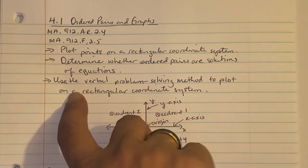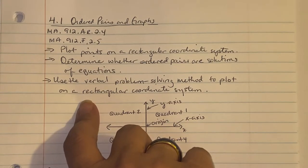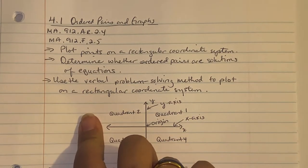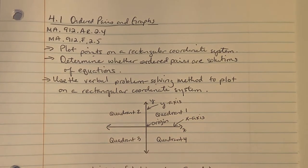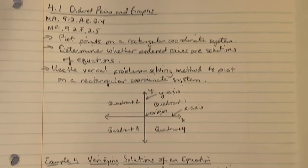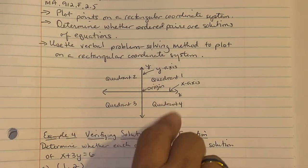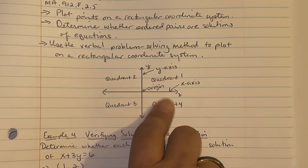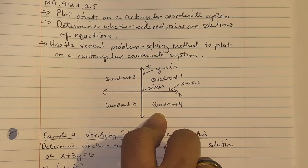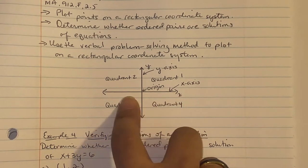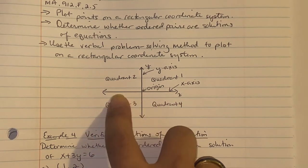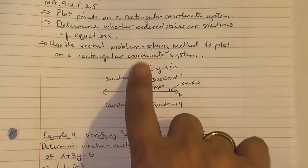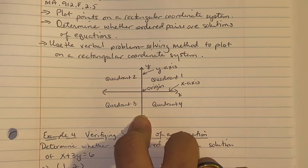A little refresher on the coordinate system: your x-y axis. The x-axis is horizontal, the y-axis is vertical. When we name our quadrants, it's counterclockwise.